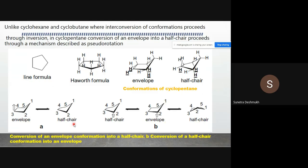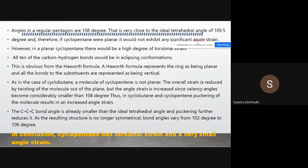The envelope conformation can transform into the half chair conformation and vice versa. Looking at carbon numbers one through five, the molecule interconverts between envelope and half chair. This conversion of an envelope into a half chair proceeds through a mechanism described as pseudo-rotation.